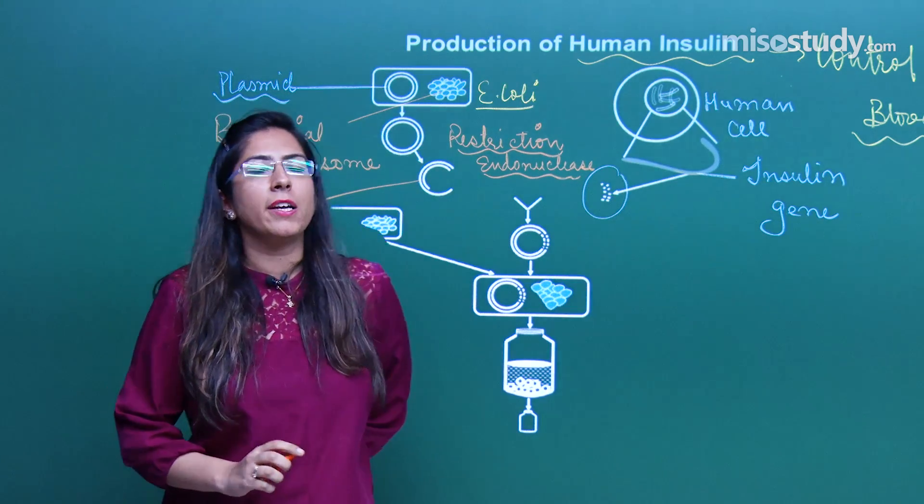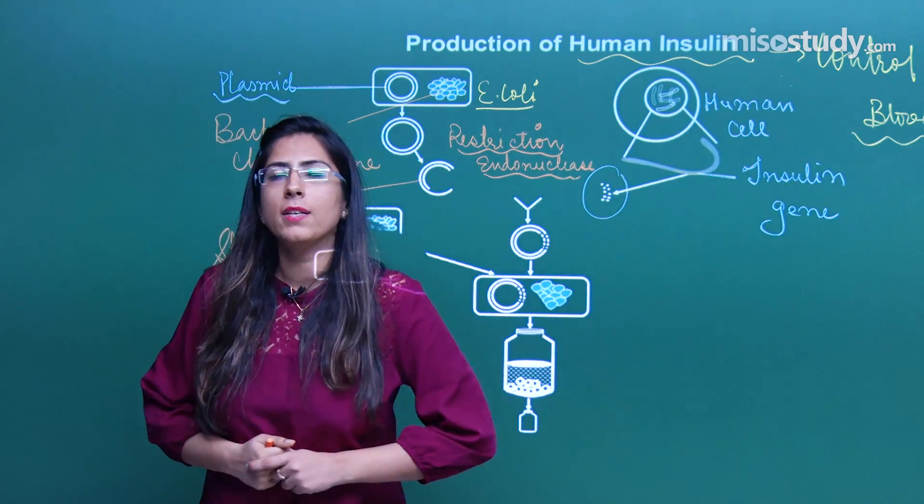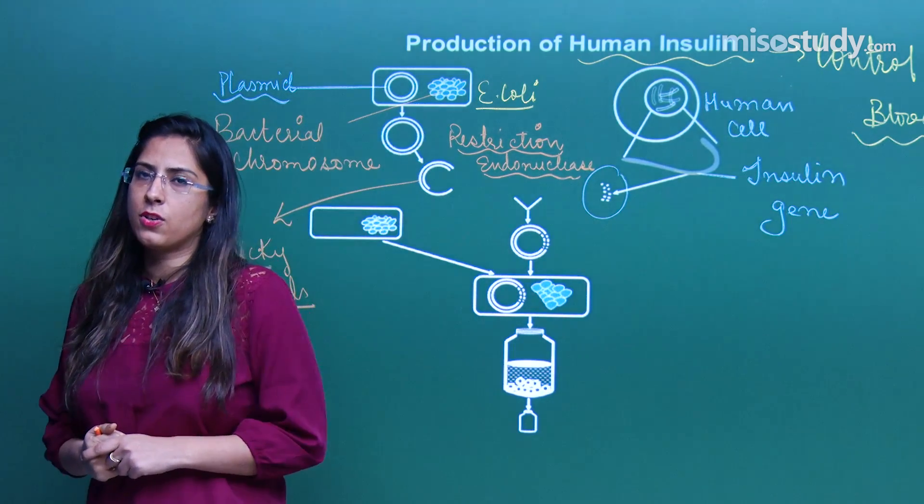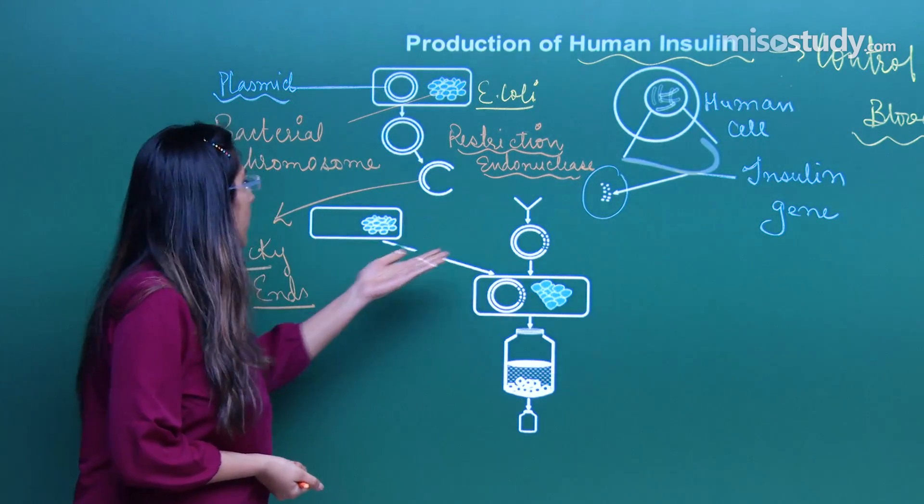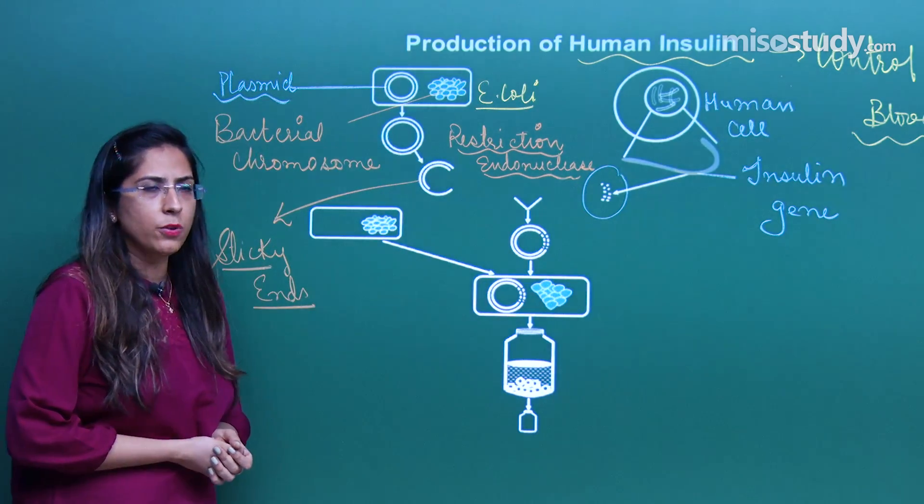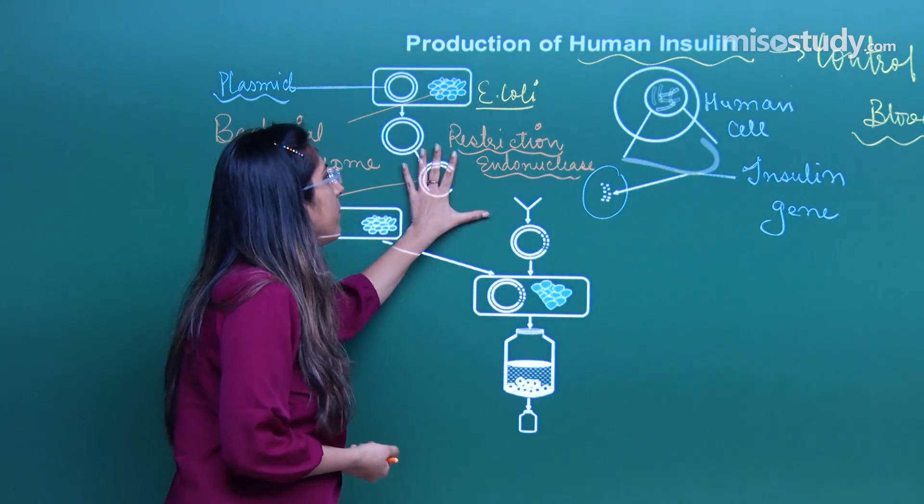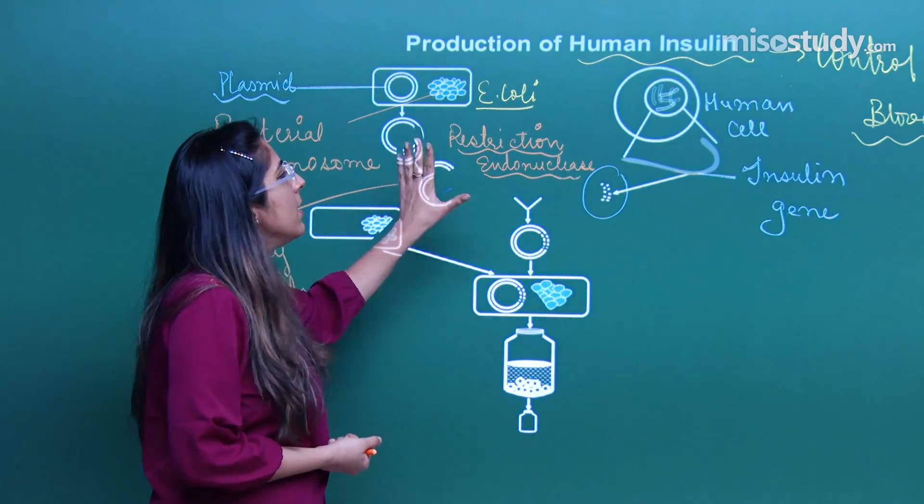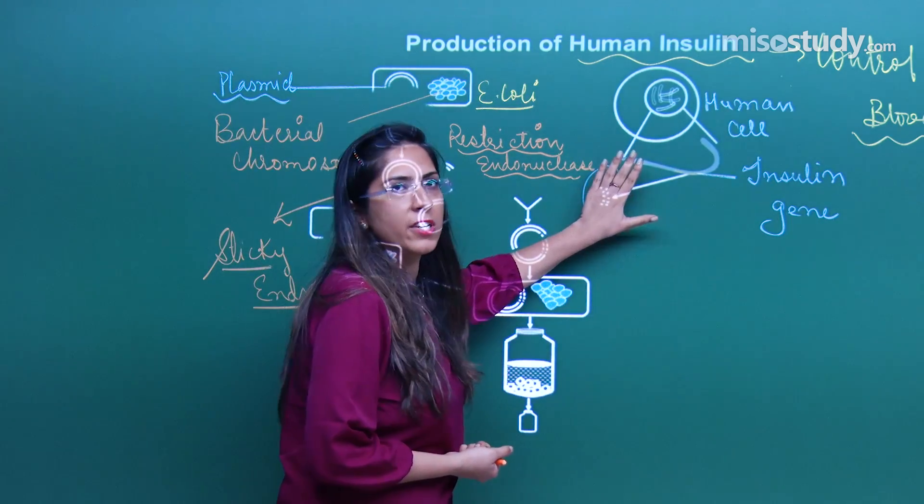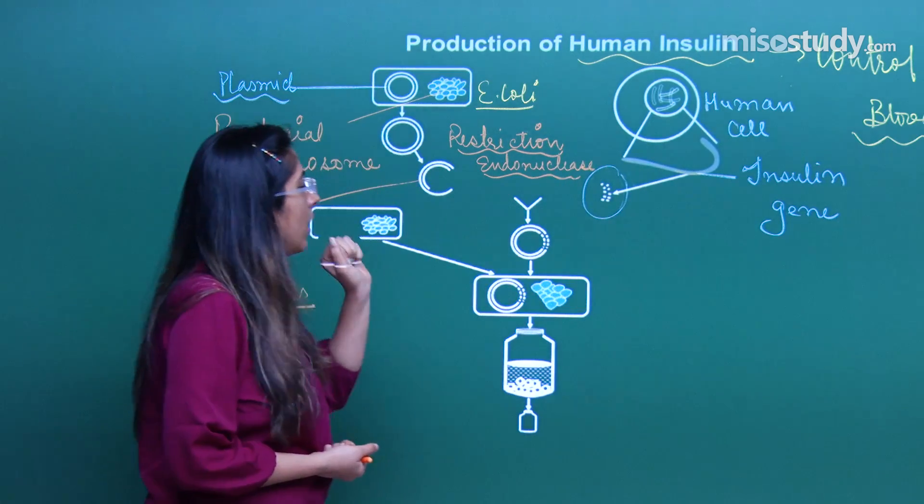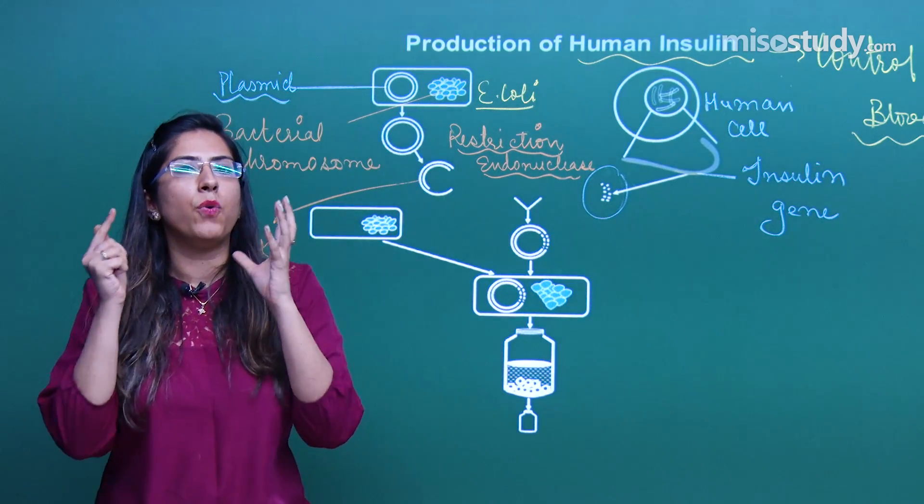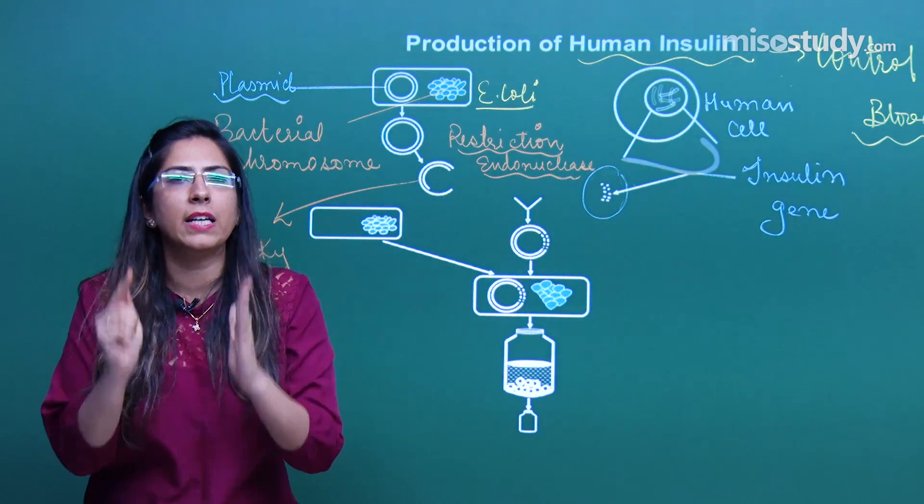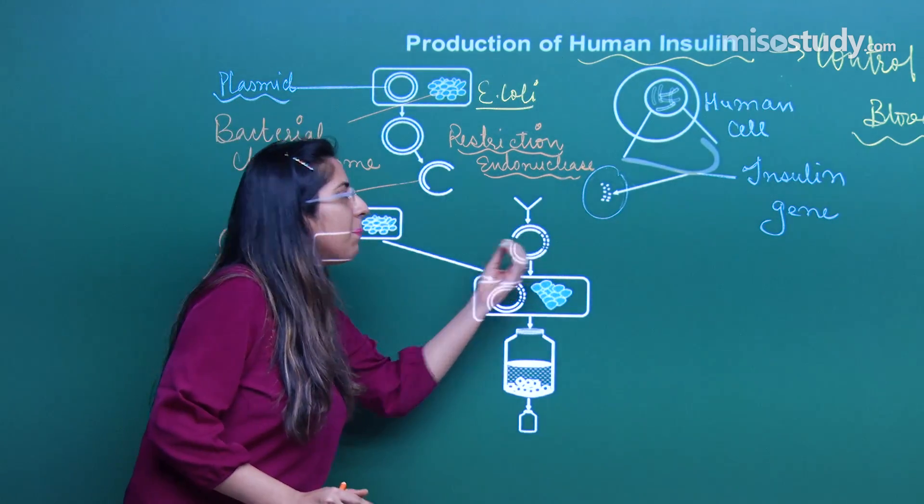Normally restriction enzymes can produce two types of ends. One is called a sticky end and another is called a blunt end. For the production, normally sticky ends are used because the same type of sticky end will be produced by this. Similarly, the same type of sticky ends will be produced by this. So that whenever I will combine these two types of DNA, what I will get is a recombinant DNA so that they can easily combine together.